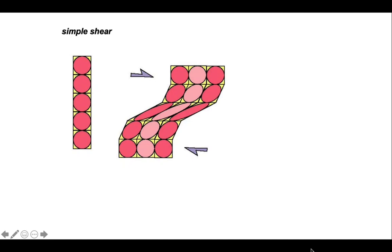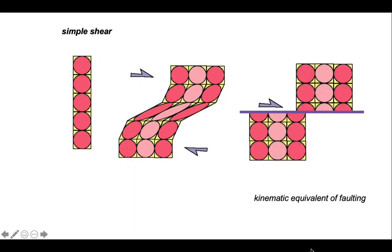So let's look at option three. This is simple shear. In this case, the wall rocks move past each other. This is the kinematic equivalent of faulting.